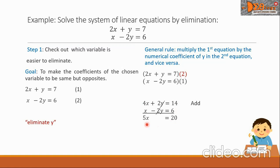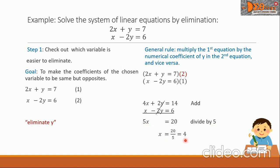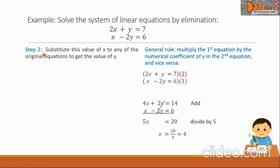Now let us solve for X. We divide the equation by the coefficient of X, which is 5. Dividing by 5, the coefficient of X becomes 1, so we have x equals 20 divided by 5, which simplifies to x equals 4. Now let us go to Step 2: substitute this value of X into any of the original equations to get the value of Y.